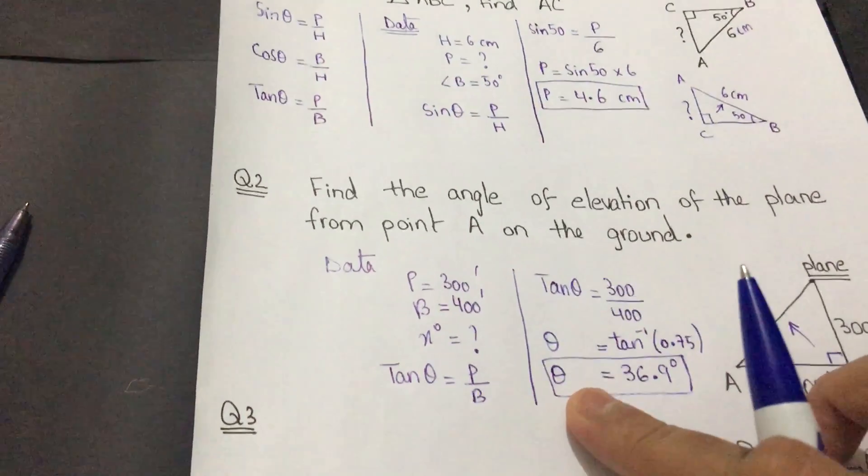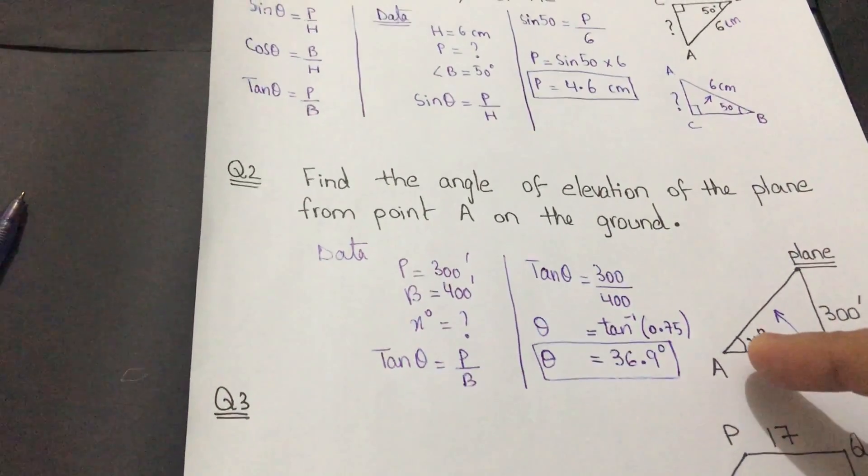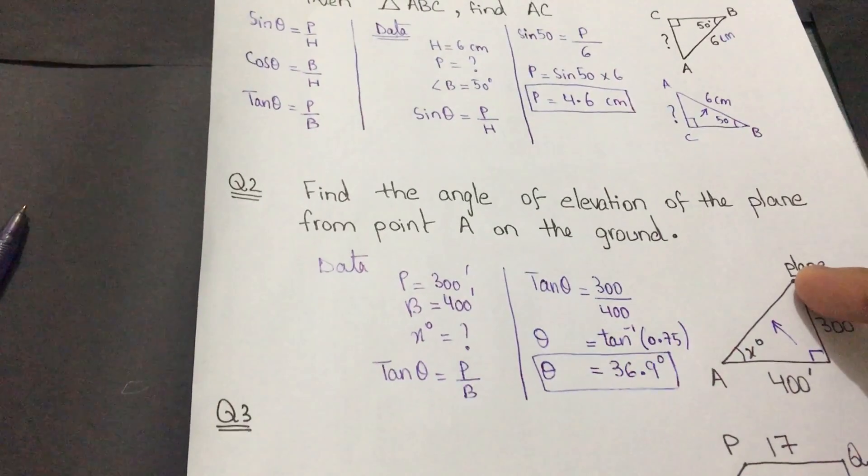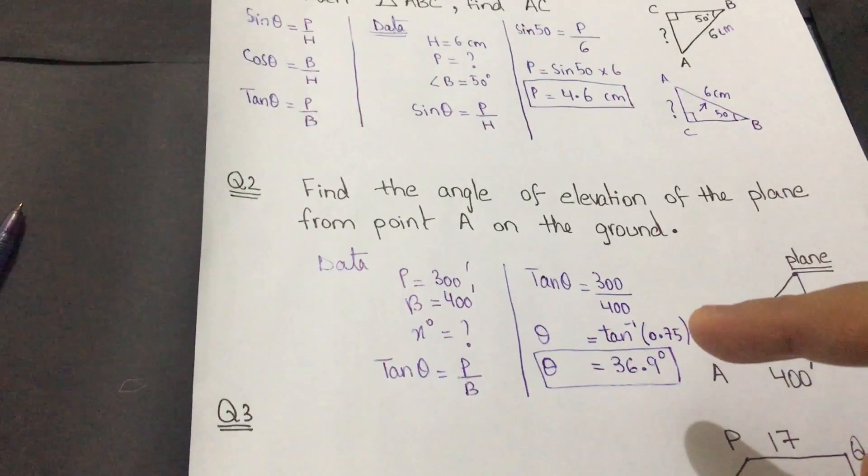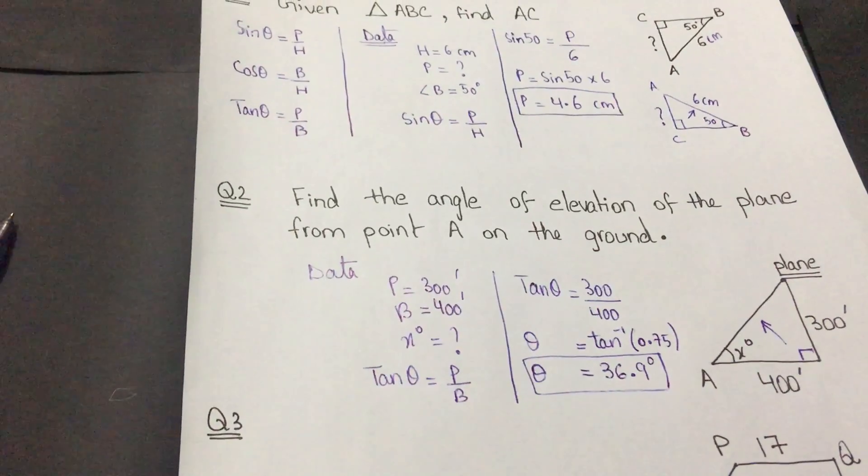That equals 36.9 degrees. So this is the value of my angle of elevation of this plane. I calculated it using trigonometric ratio because this is a right angle triangle.